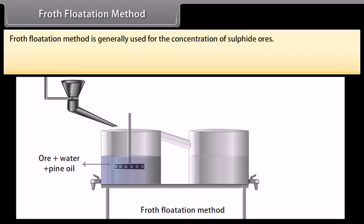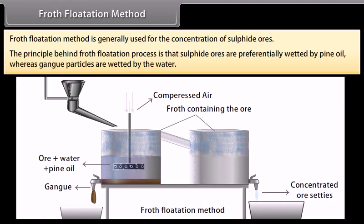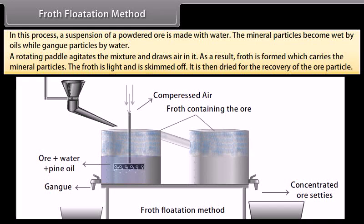Froth flotation method. This method is generally used for the concentration of sulphide ores. The principle behind froth flotation process is that sulphide ores are preferentially wetted by pine oil whereas gang particles are wetted by water. In this process, a suspension of a powdered ore is made with water. Collectors like pine oil, fatty acids, and xanthates are added to it. Froth stabilizers like cresols and aniline stabilize the froth. The mineral particles become wet by oils while gang particles by water. A rotating paddle agitates the mixture and draws air in it. As a result, froth is formed which carries the mineral particles. The froth is light and is skimmed off. It is then dried for the recovery of the ore particles.